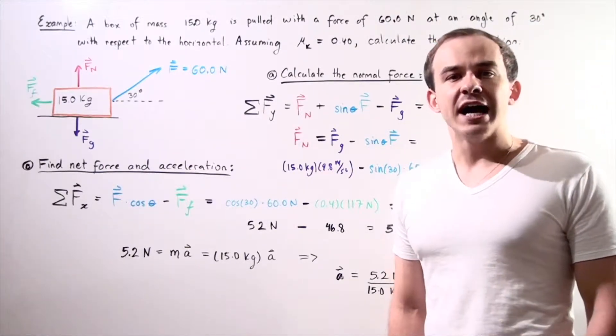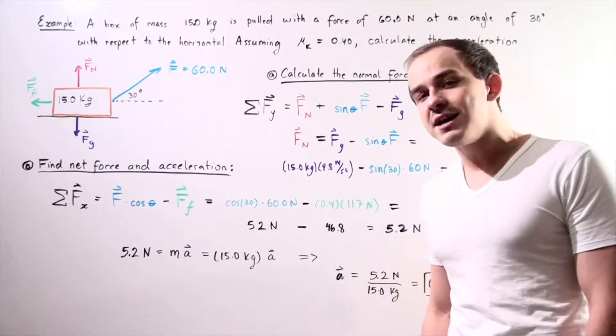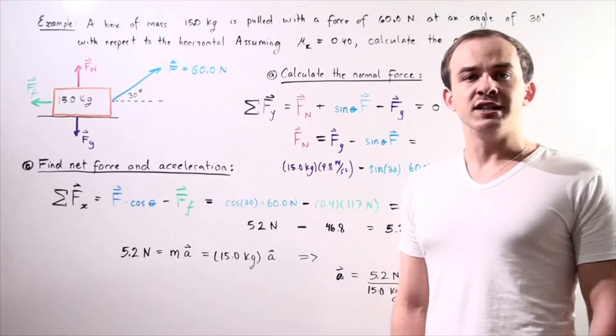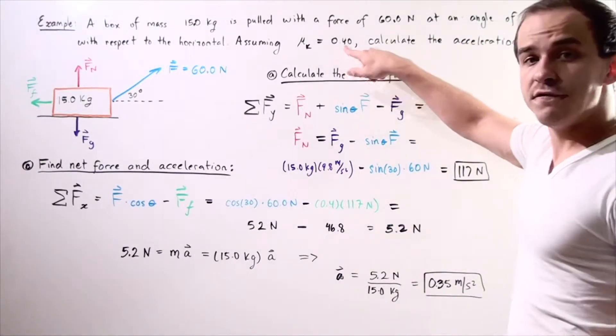Now we want to find what the acceleration of the box is, assuming that the coefficient of kinetic friction is 0.4.